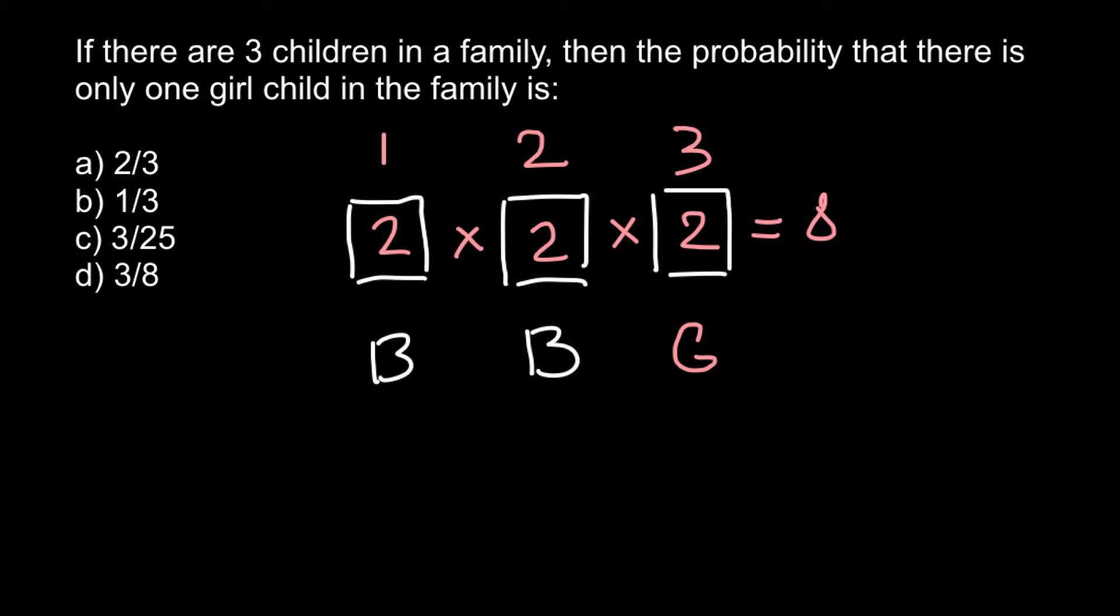And another combination can be a boy, then a girl, and then a boy. This is the second combination. And the third combination can be first child is a girl, second is a boy, and third also would be a boy.